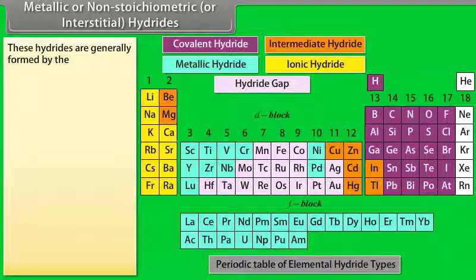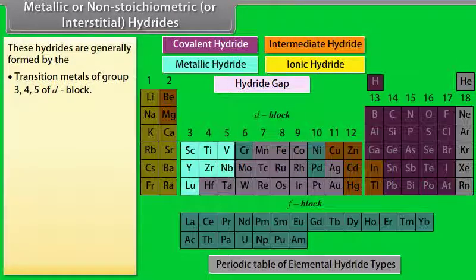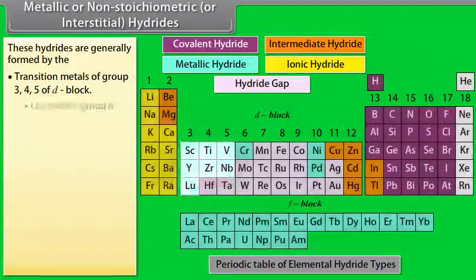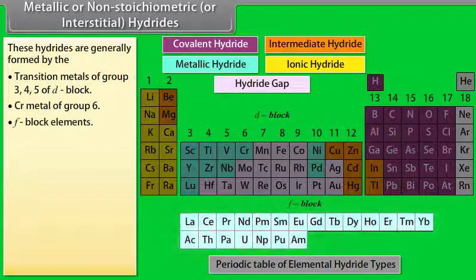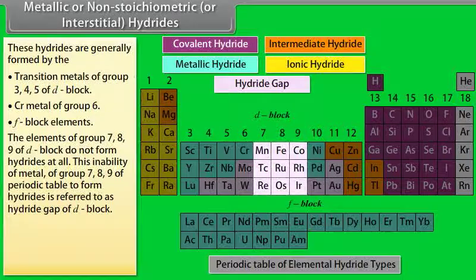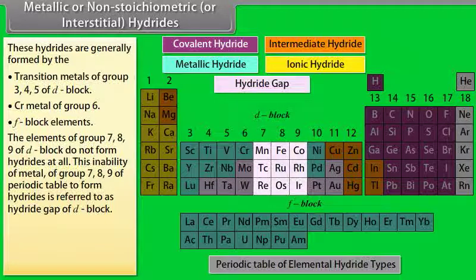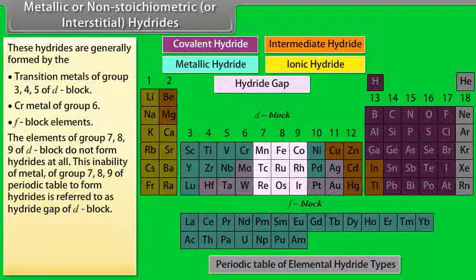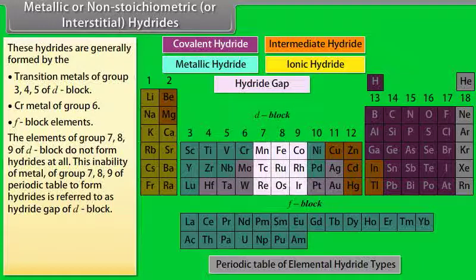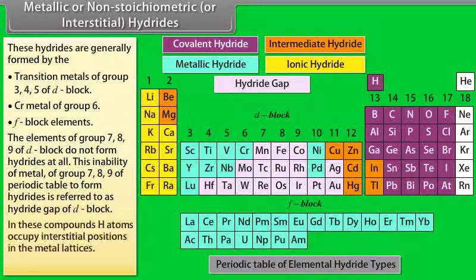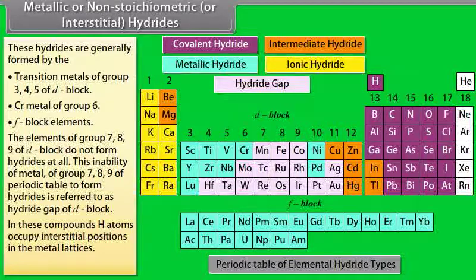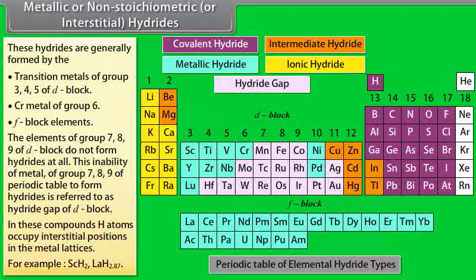Metallic or non-stoichiometric or interstitial hydrides: These hydrides are generally formed by the transition metal of group 3, 4, 5 of d-block, metals of group 6, and f-block metals. The elements of group 7, 8, 9 of d-block do not form hydrides at all. This inability of metal of group 7, 8, 9 of periodic table to form hydrides is referred to as hydride gap of d-block. In these compounds, H atoms occupy interstitial positions in the metal lattices. For example, ScH2, LaH2.87.